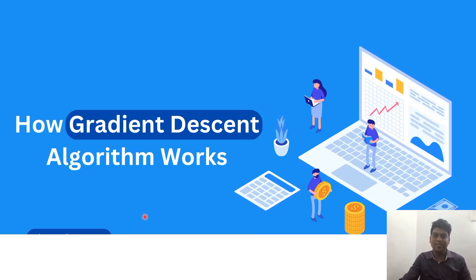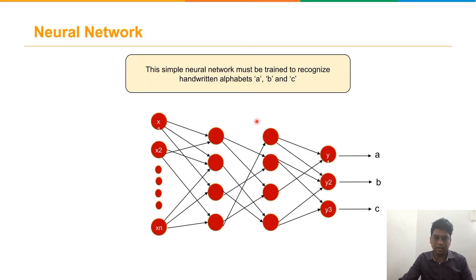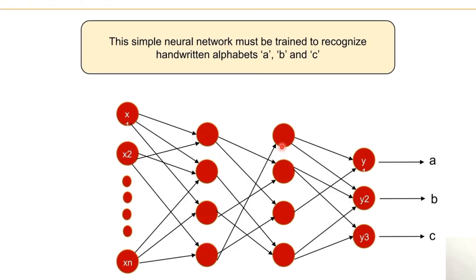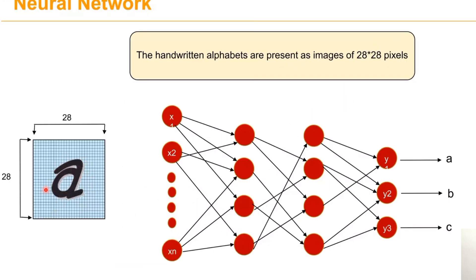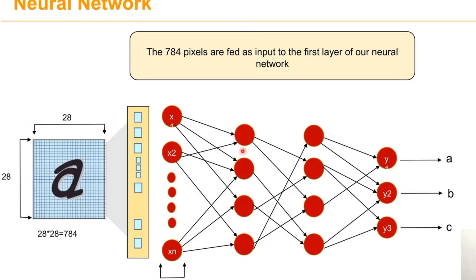Welcome to today's topic: the gradient descent optimization algorithm. This is a simple neural network trained to recognize the alphabets A, E, and C — a simple text recognition task. For input A, we have a pixel size of 28x28, giving a total of 784 neurons, since every pixel represents one value. The network has to predict the alphabets A, B, and C.